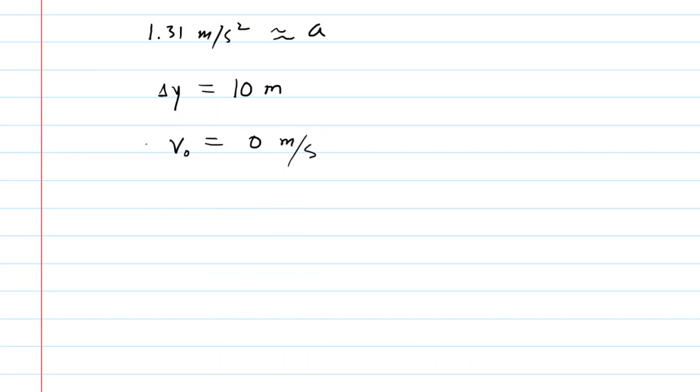Notice that because the man started from rest, his initial velocity was 0 meters per second. Now we go back to an earlier chapter when you learned about kinematics. And we consider the following equation. We have final velocity squared is equal to the initial velocity squared plus 2 times the acceleration times the displacement. Now because the initial velocity is 0, we can actually knock this term out here.